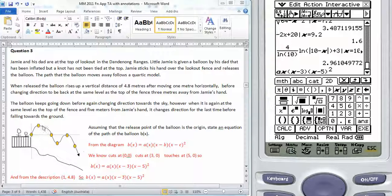The balloon follows this particular path and because of that we know that the general form will be a times x times x minus b times x minus c and we know from the description that it cuts at zero zero, cuts at three zero, touches at five zero.